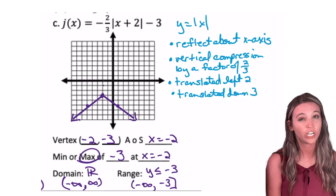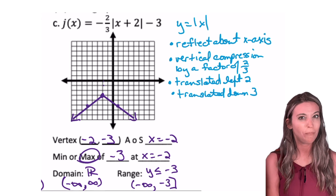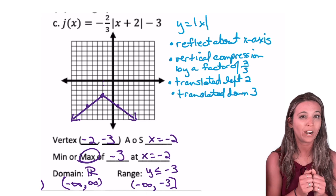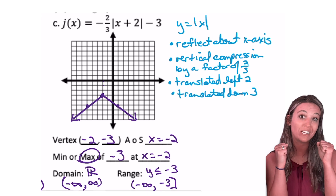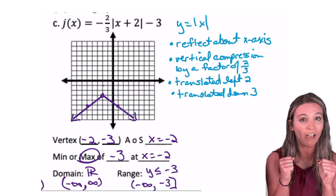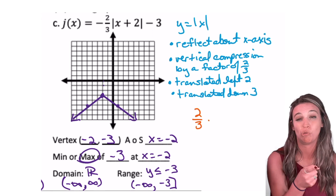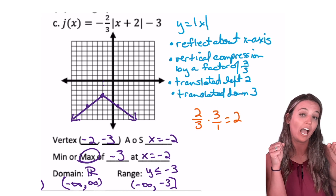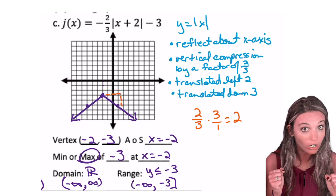For j of x, check your transformations. Did you get a vertex of negative 2, negative 3? The pattern points were a little tricky — we knew we were working down because of the reflection. When I go over 1, my y values are multiplied by two-thirds, so instead of down 1, I go down two-thirds. What works nicely with two-thirds? Three times two-thirds is two. So going over 3, instead of down 3, I go down two.